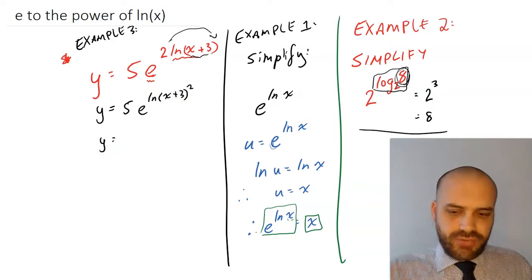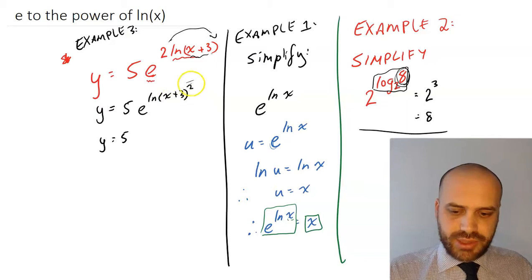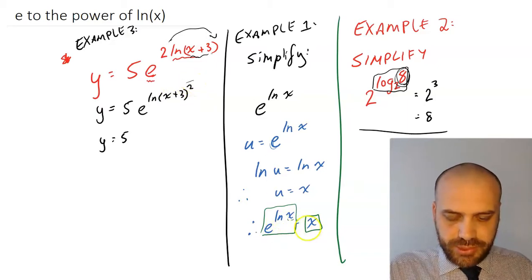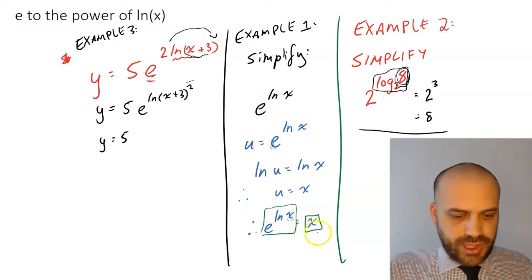Now we're really finished here because that now, this whole bit here, e to the ln x plus 3 squared, that follows this neat little bit here.